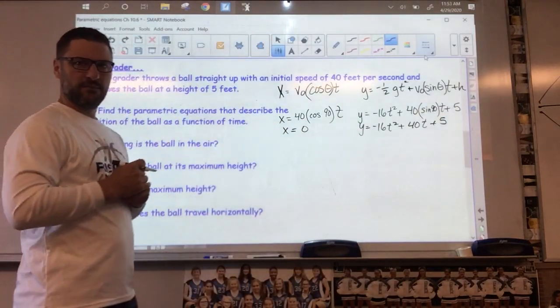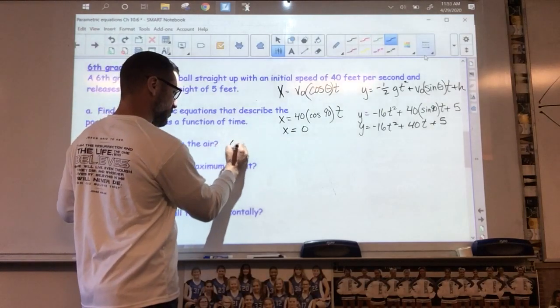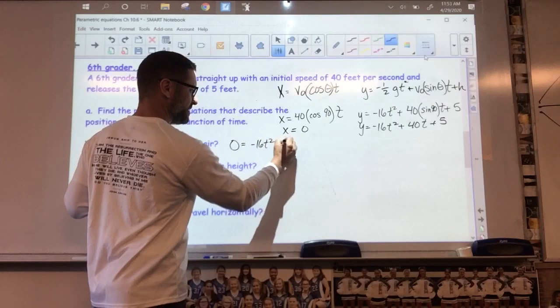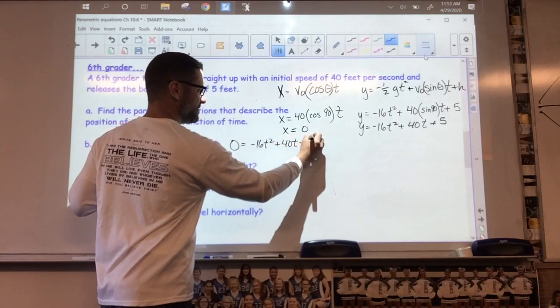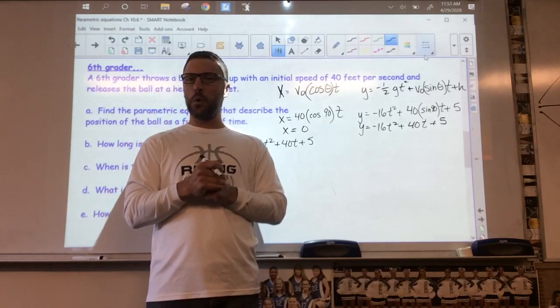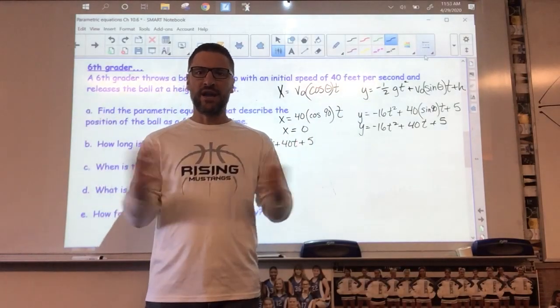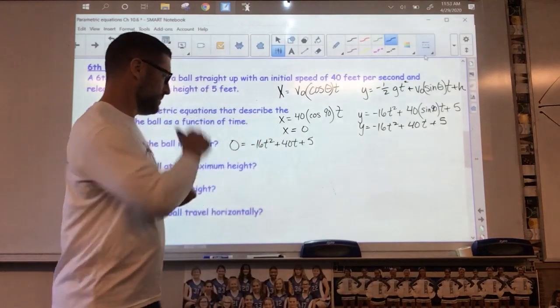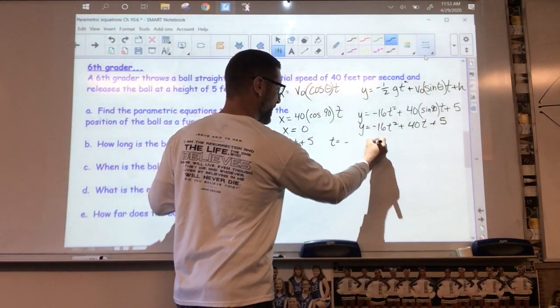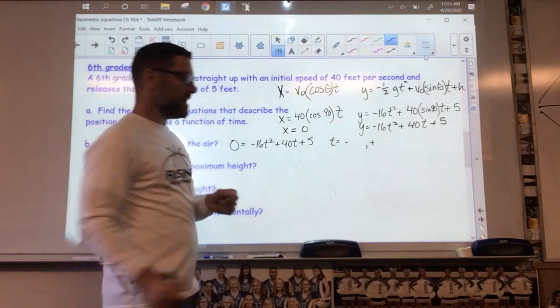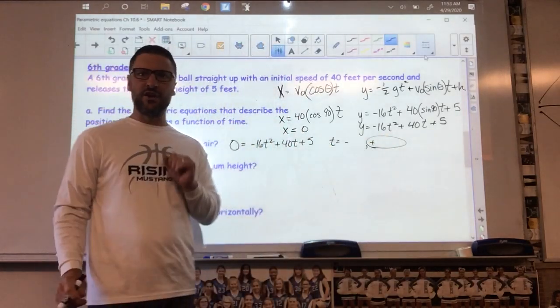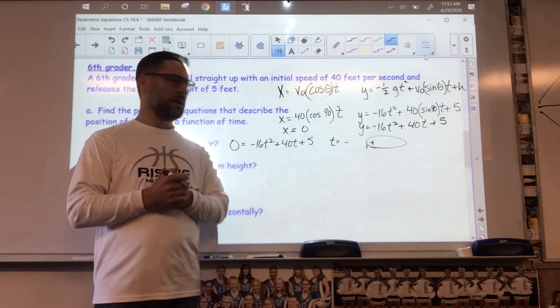How long is the ball in the air? Well, that's when my y value is 0. Negative 16t² plus 40t plus 5. You're either going to use the quadratic formula, or you're going to go into your poly root finder. You're going to get two t values, one negative and one positive. How long it's in the air is the positive value there. You can press pause and go do that now and enter your answer.